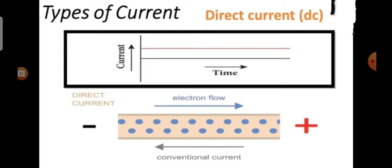There are two distinct types of current. One is direct current and the other one is alternating current.